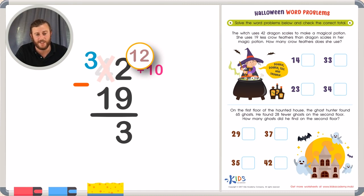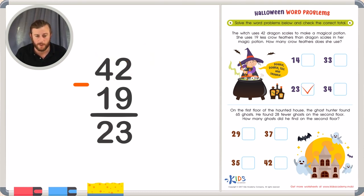And if we subtract the tens place, 3 minus 1. 1, 2, 3. 3 minus 1 is 2. We know she has 23 crow feathers in her magical potion. Because 42 minus 19 is 23. Meaning 19 less than 42 is 23.